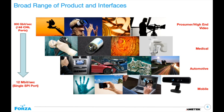Here's a slide regarding some of the applications where our sensors are currently being used: cinematography, prosumer high-end video, medical fields, automotive, and the mobile market. One of our highest bandwidth sensors is currently running at 800 gigabits per second with 166 CML ports. One of our smaller designs runs data off a single SPI port at 12 megabits per second, so we have a lot of designs in between.